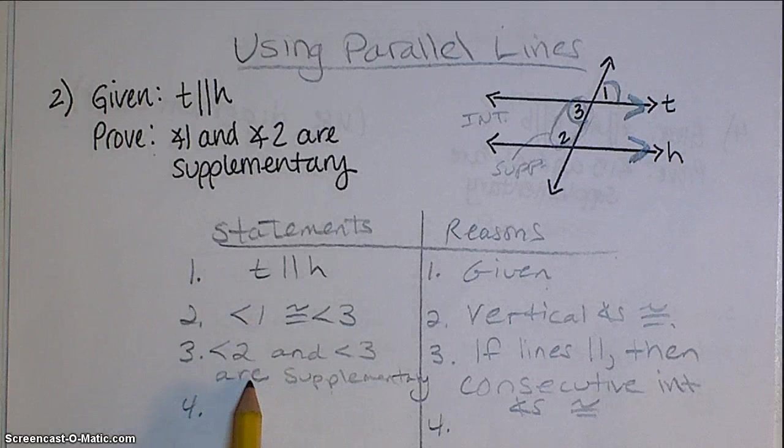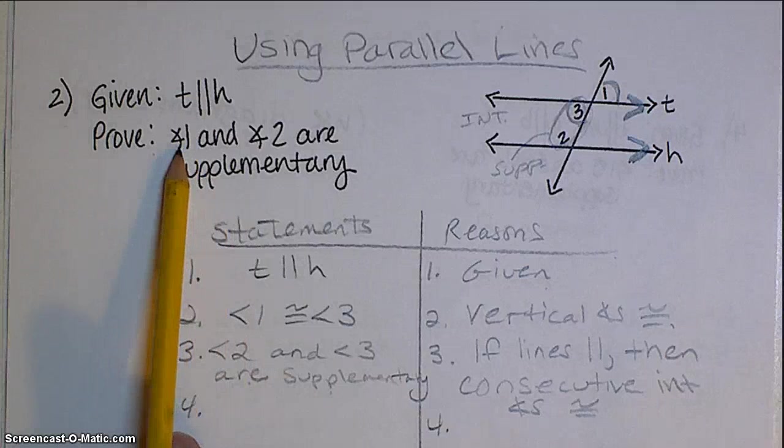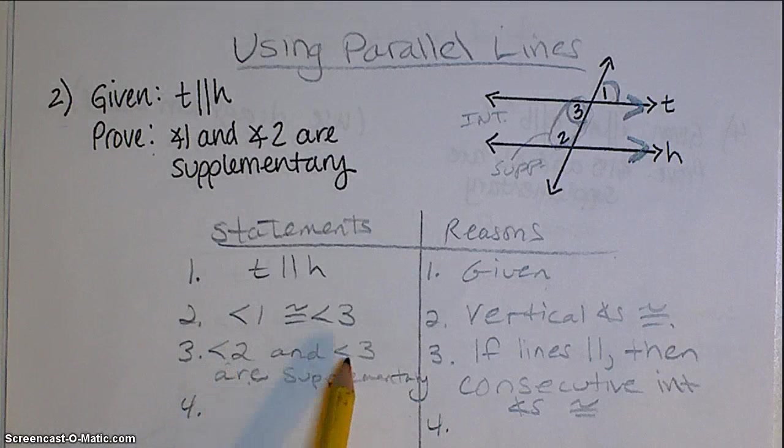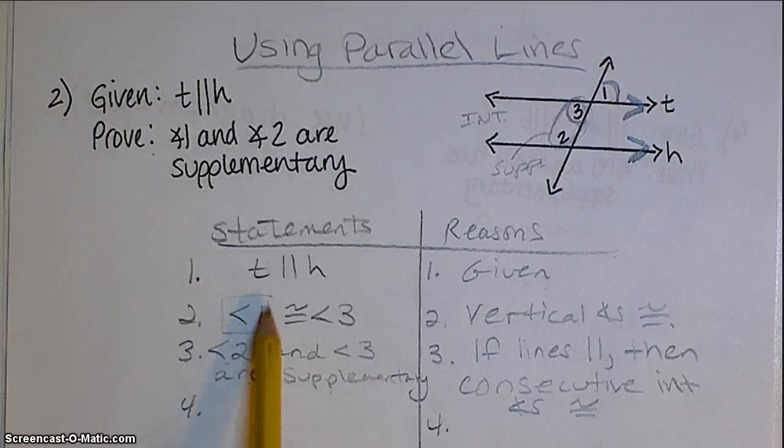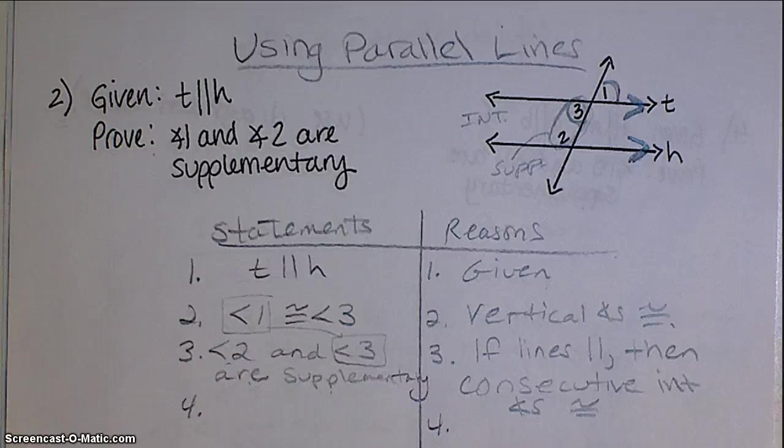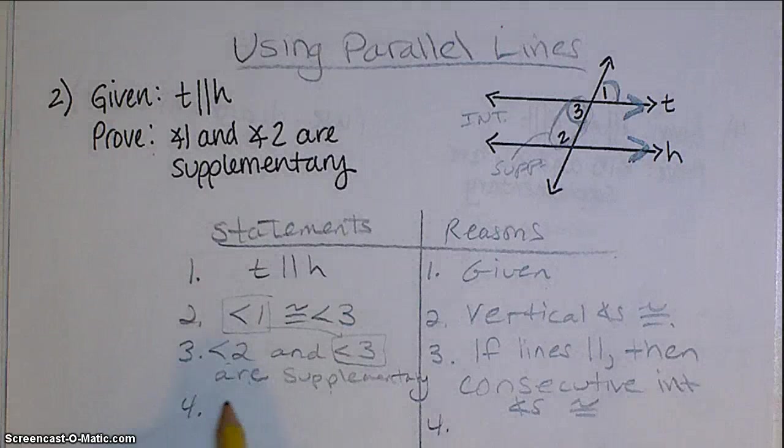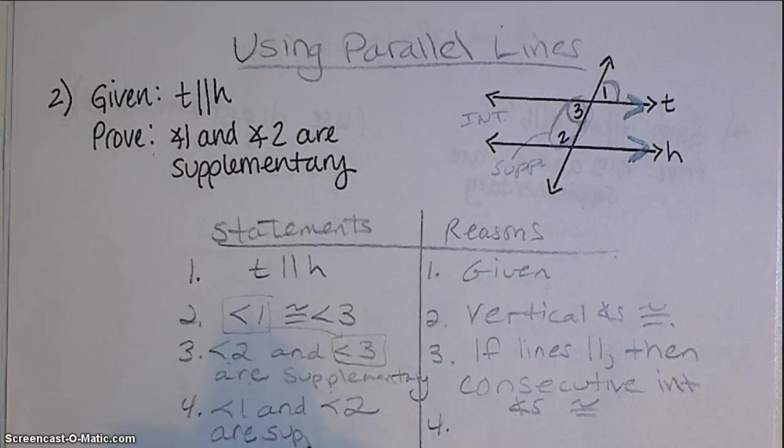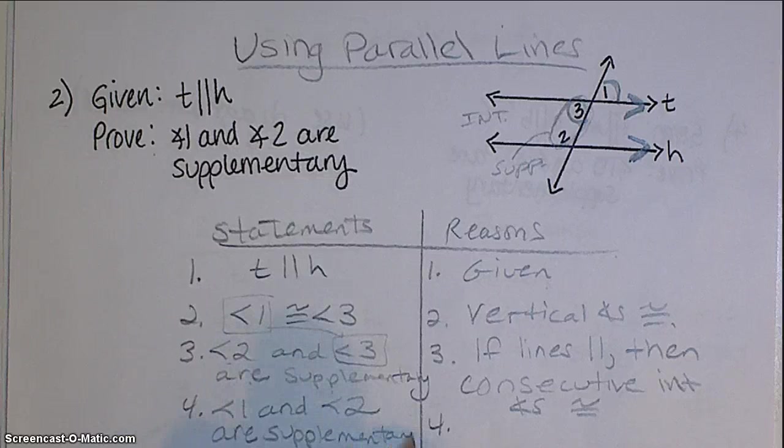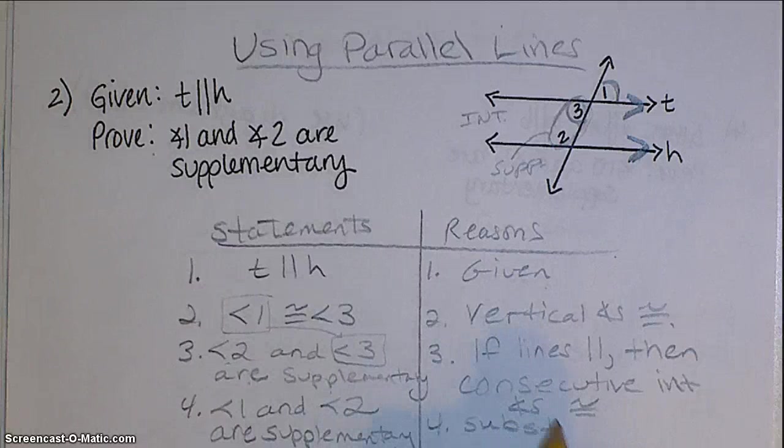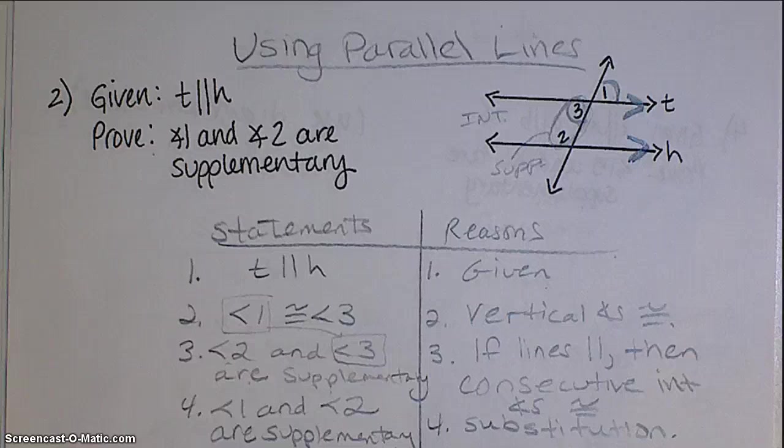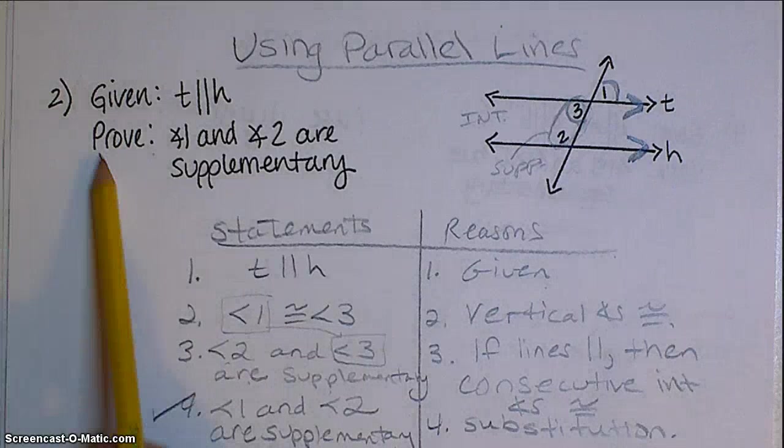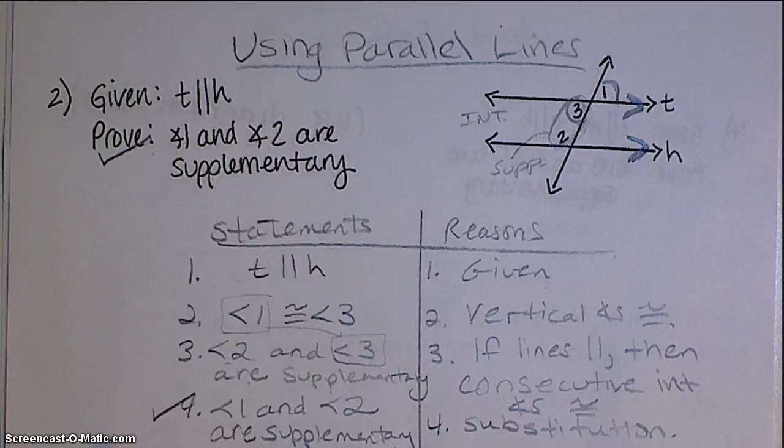Well, now this statement looks really close to what we're trying to prove. The proven statement is asking us to prove 1 and 2 are supplementary. Here we have 2 and 3 are supplementary. So if I take this angle 1 and substitute it in place of angle 3, it will match the statement that I'm looking for. So now angle 1 and angle 2 are supplementary by substitution. And now I'm done, because my last statement matches what we're trying to prove, and there's nothing left to do.